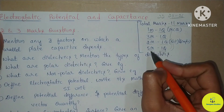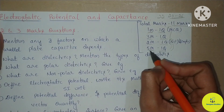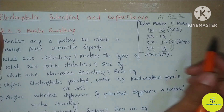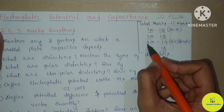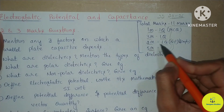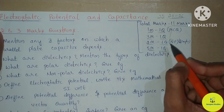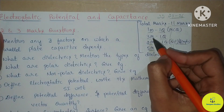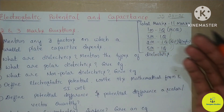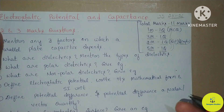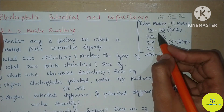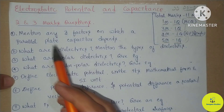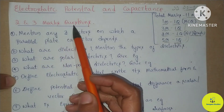For the 5-mark section, the questions include numericals. For 2-mark questions, they are simple. For 3-mark questions, it is the usual theory. For 1-mark questions, it is MCQs. So these are the two and three mark questions.